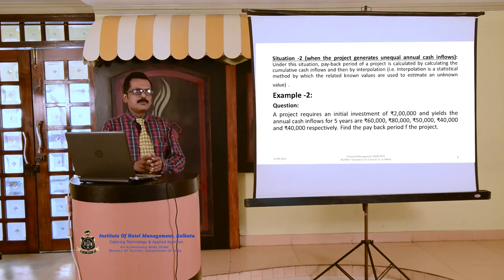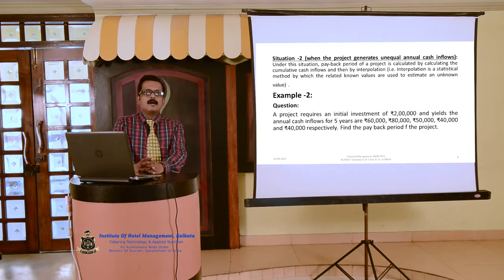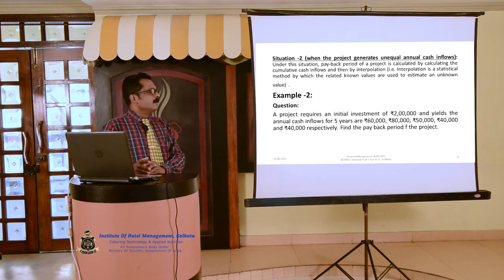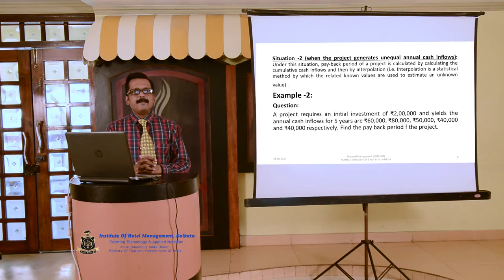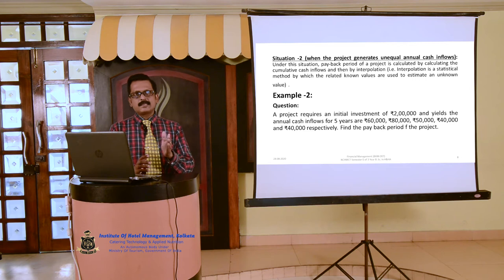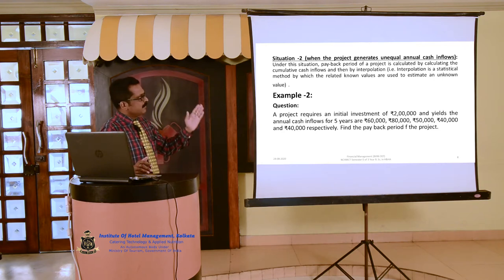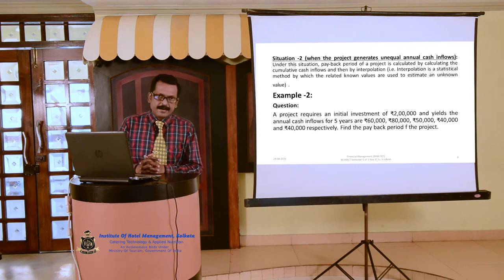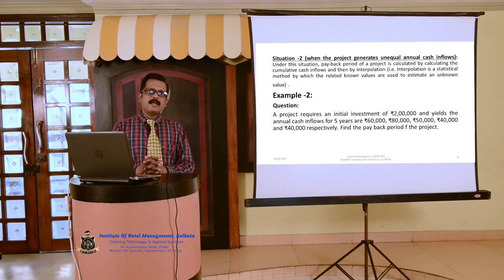Situation two deals with when the project generates unequal annual cash inflows — meaning the project generates different amounts every year. Under this situation, the payback period is calculated by first computing the cumulative cash inflows and then by interpolation. Interpolation is a statistical method by which related known values are used to estimate an unknown value.